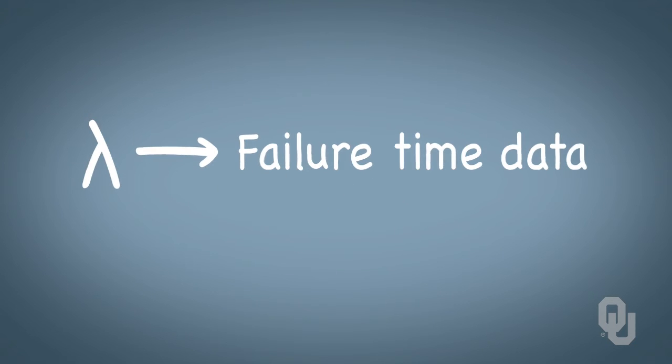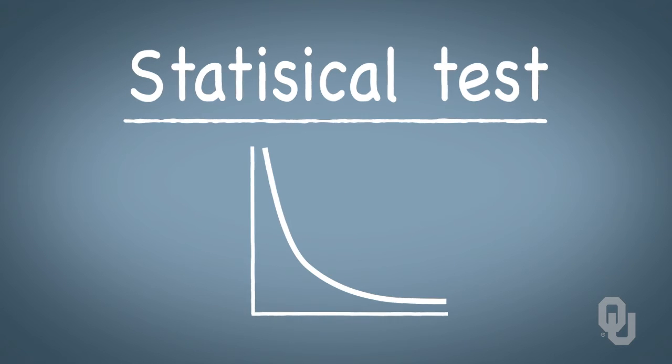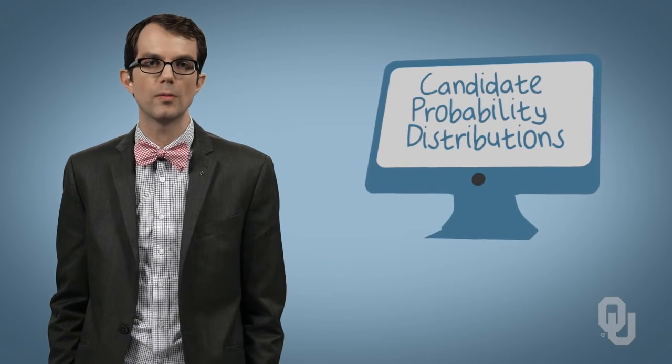For example, now that we have the optimal exponential parameter lambda that fits our failure time data, we can perform a statistical test that lets us know if an exponential distribution is really the best distribution. Many statistical software packages have the ability to compare our sample data to several different candidate probability distributions in a matter of seconds.